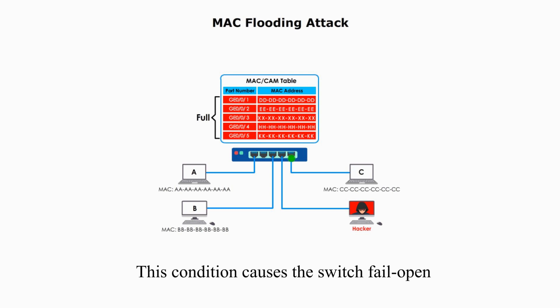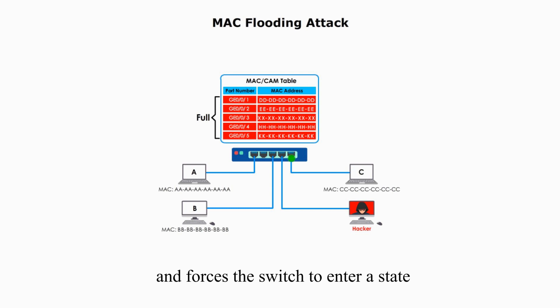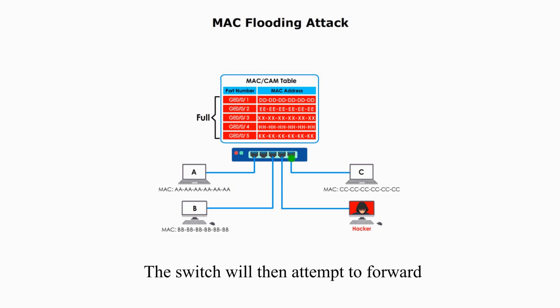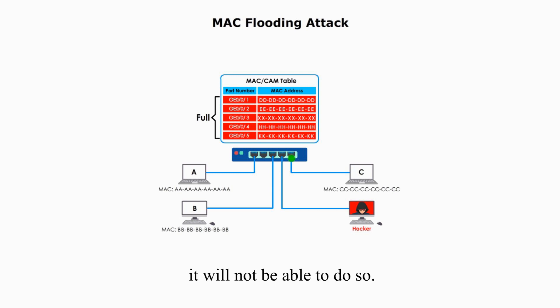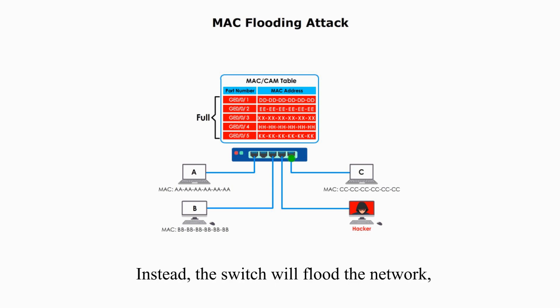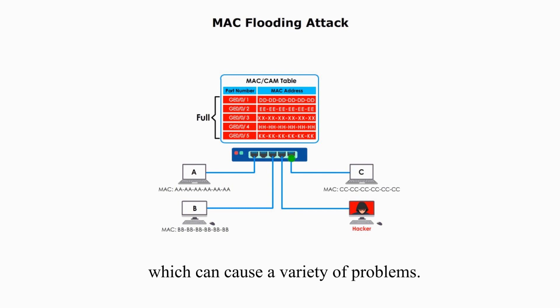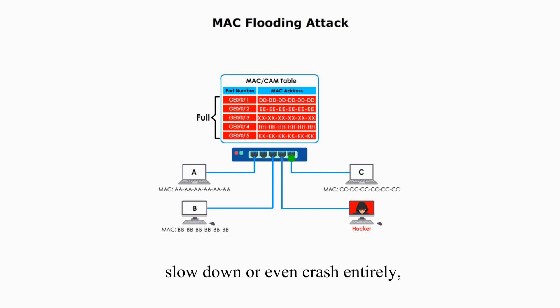This condition causes the switch to become overwhelmed and forces it to enter a state where it forwards traffic to all interfaces. The switch will attempt to forward frames to their intended destinations, but because the MAC addresses are fake, it will not be able to do so. Instead, the switch will flood the network, which can cause the network to slow down or even crash entirely as it becomes overwhelmed by the flooding.